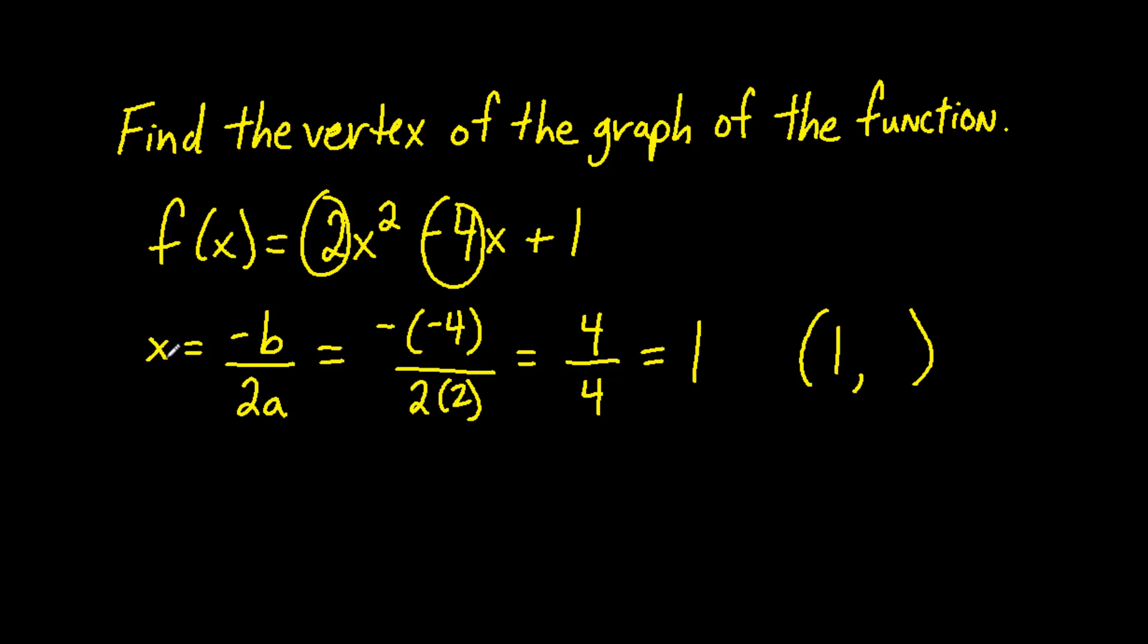To do this, we plug in 1 for x in the original problem. So our original problem, f(x) is the same as y equals 2 times x squared, and x again is 1, minus 4 times x, and again x is 1, plus 1. Simplifying, we get 2 times 1 which is 2 minus 4 times 1 plus 1 which equals negative 1. That means that the vertex has coordinates (1, -1).